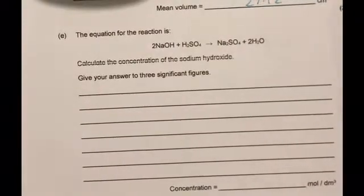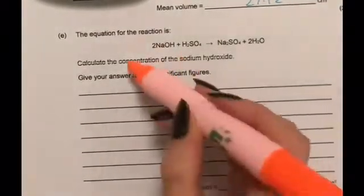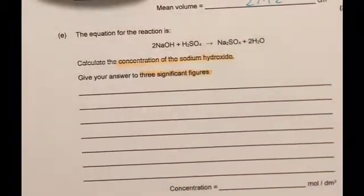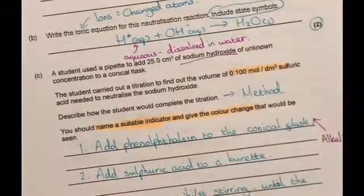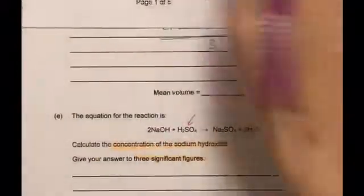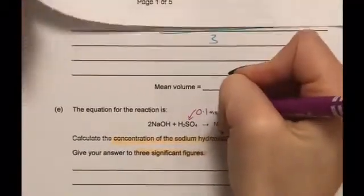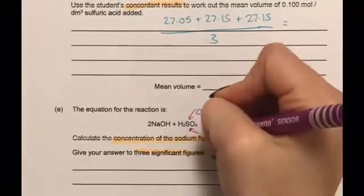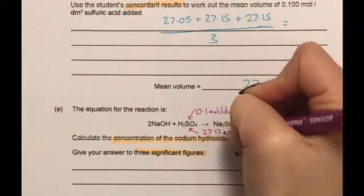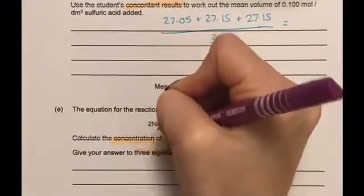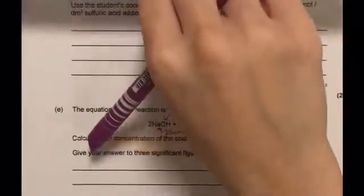The equation for the reaction is given again below. Calculate the concentration of sodium hydroxide. Give your answer to three significant figures. We've seen earlier that our concentration of sulfuric acid is 0.1. Our volume of sodium hydroxide is 25. For sulfuric acid we've got a concentration of 0.1 and we worked out here that we've got a mean volume of 27.12 centimetres cubed. So in hydroxide we don't know the concentration but we know that the volume is 25 centimetres cubed.